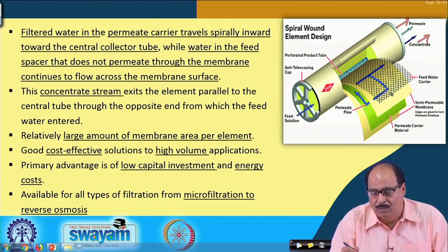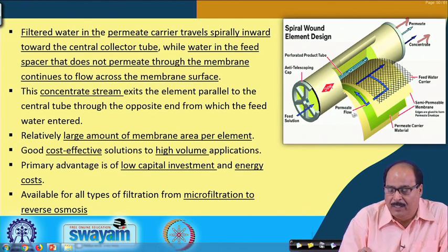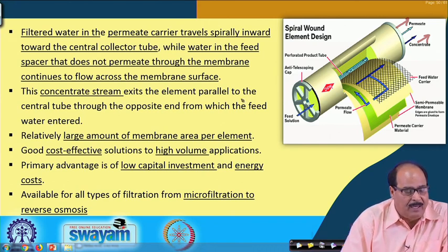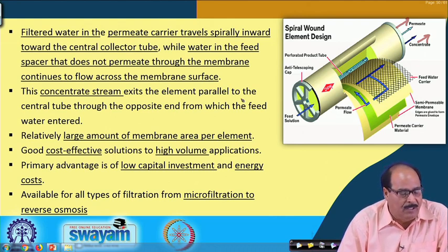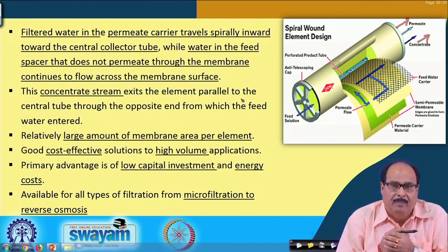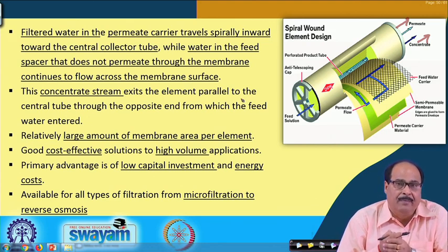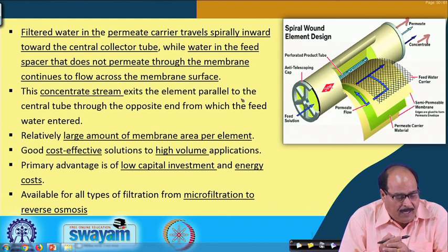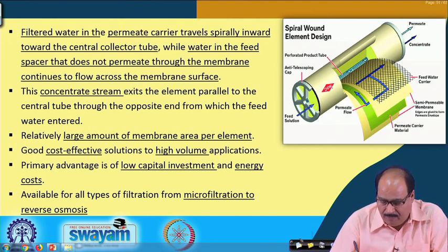Water in the feed spacer that does not permeate through the membrane continues to flow across the membrane surface, and the concentrate exits the element parallel to the central tube through the opposite end from which the feed water entered. Relatively large membrane area can be provided per element and it is a cost-effective solution for high volume applications, with low capital investment and energy saving. It is available for all types of filtration processes, from microfiltration to reverse osmosis.